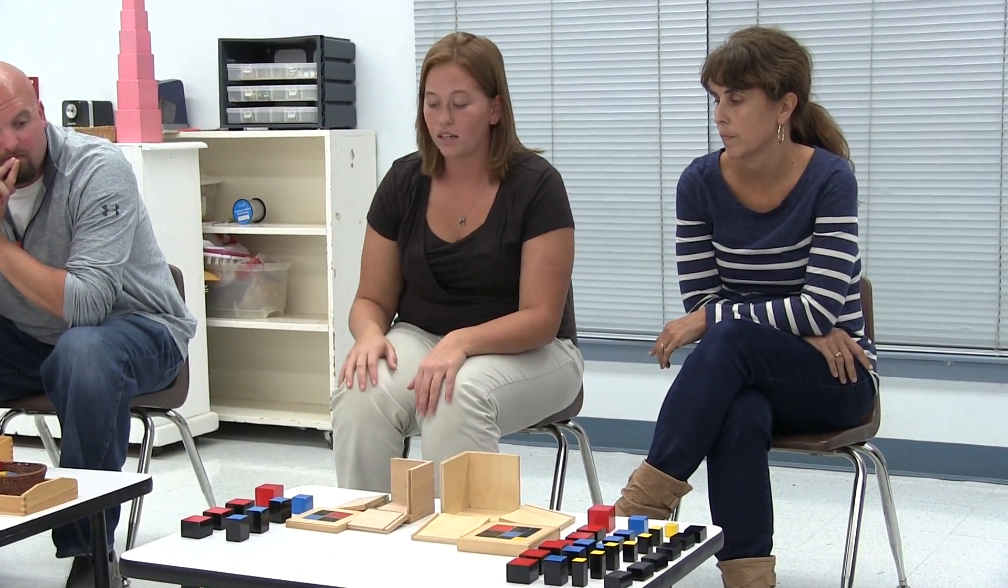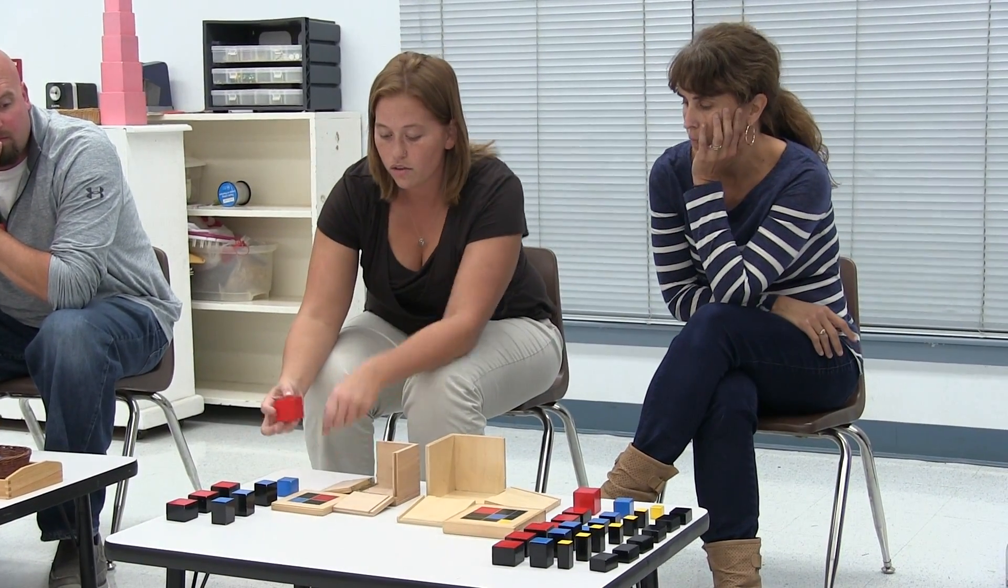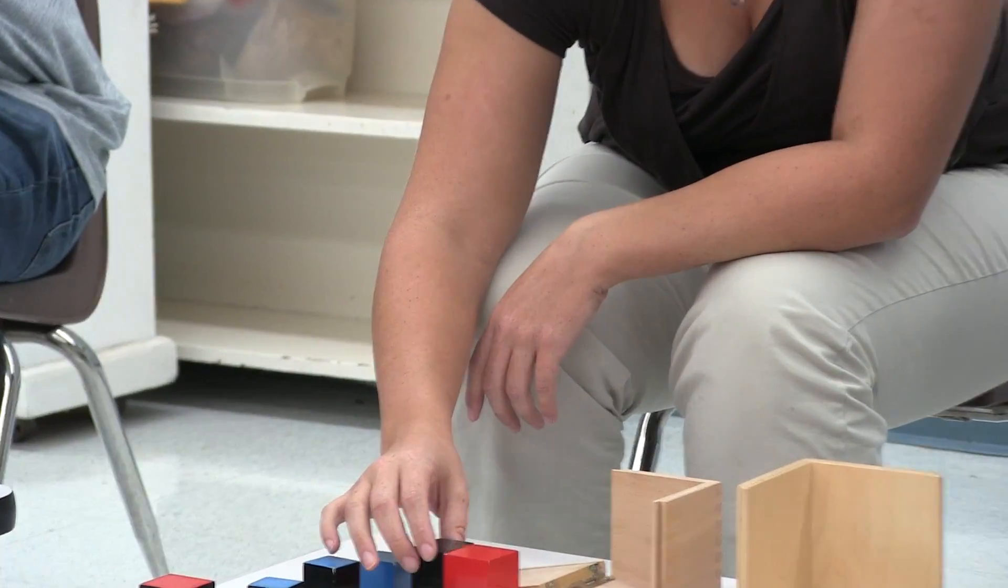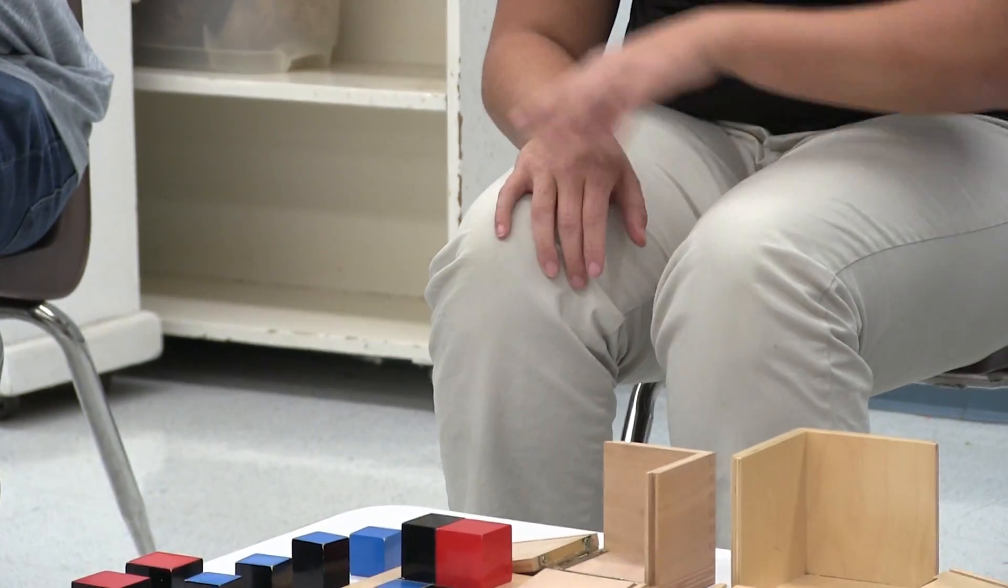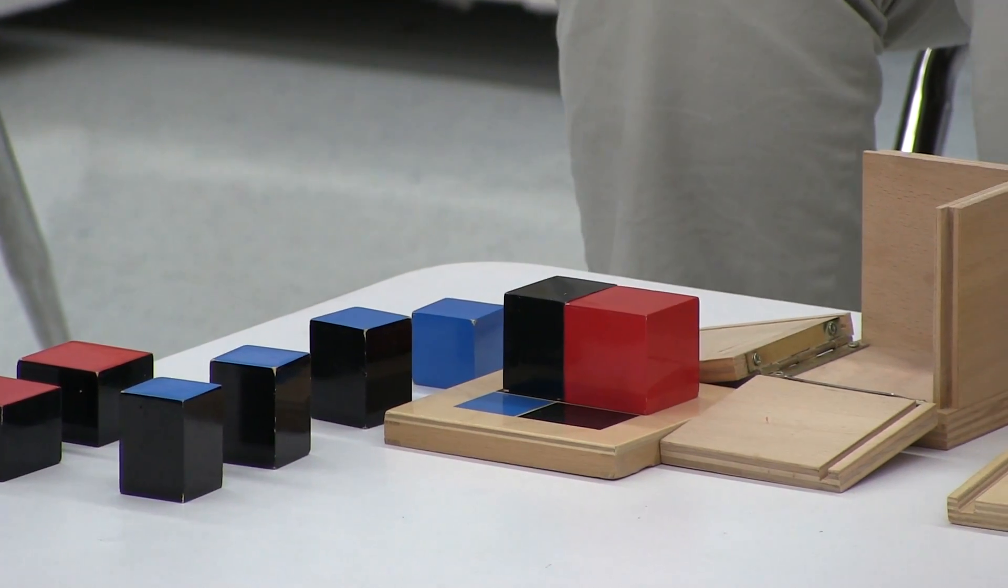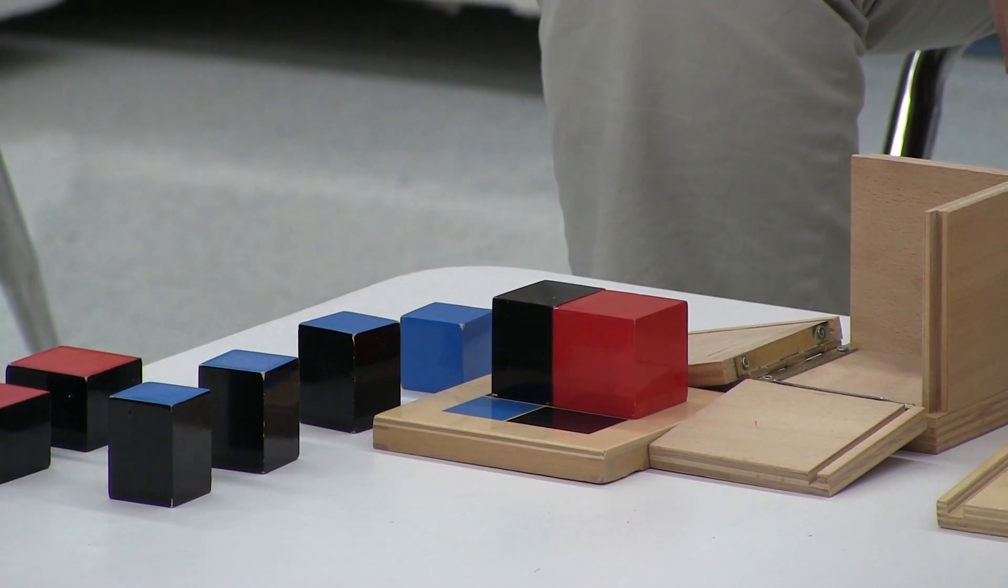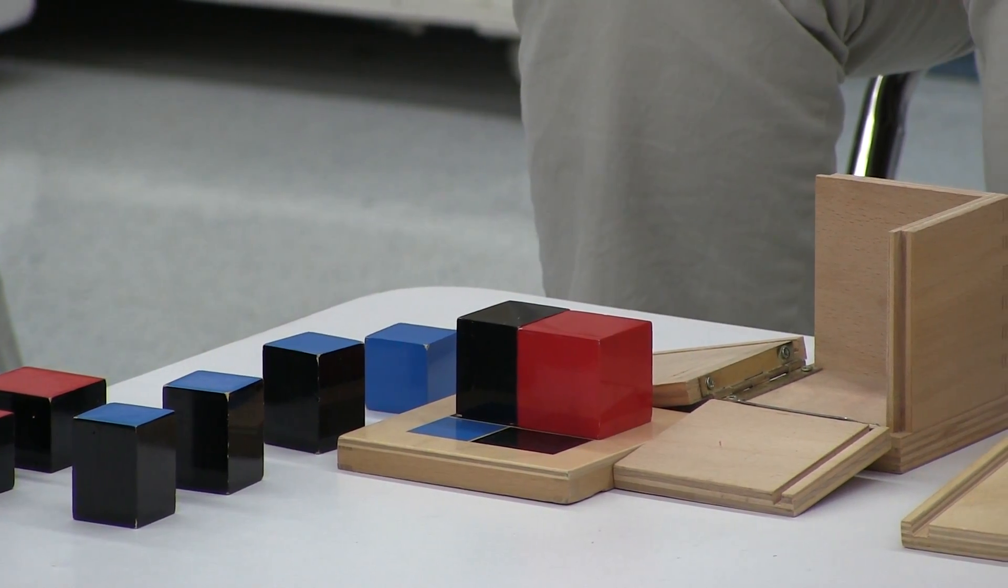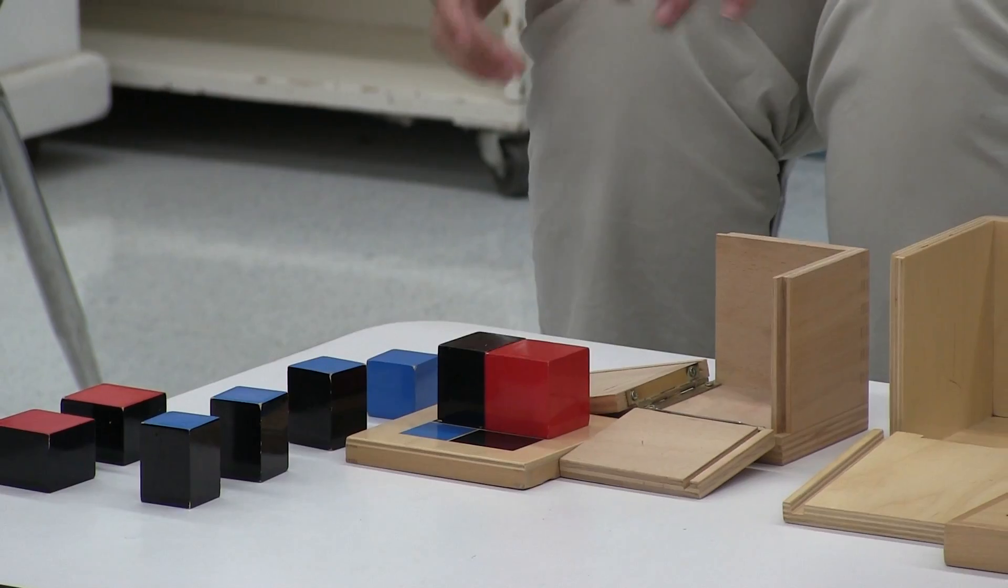All we do as the guide is say red touches red, I'm going to put it on, red touches red, black touches black. So it's very simple language and they're just building the puzzle from that. This is building their mathematical mind and putting things into order that they'll use later on in quantity and symbol, like the spindle box, and once we move into addition and things like that.